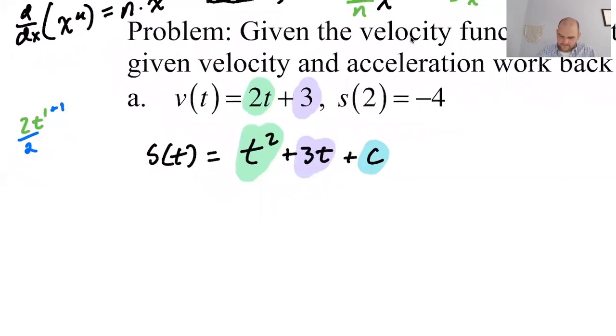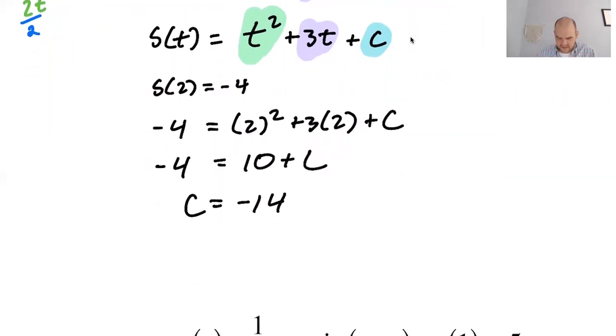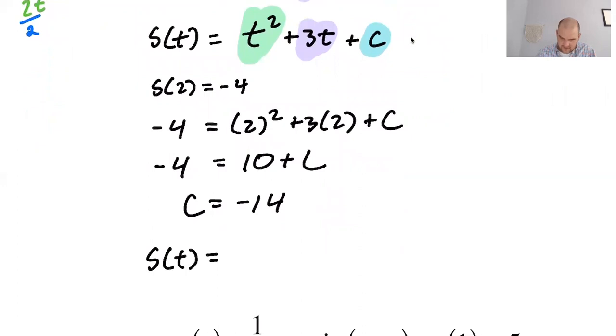How are we going to solve for this? Well, we also know that s of 2 is negative 4, which is kind of weird random information, unless you remember to write plus c. So if I plug in, knowing that s of 2 is equal to negative 4, that means negative 4 is equal to 2 squared plus 3 times 2 plus c. So what do we have here? Negative 4 is equal to 6 plus 4, 10 plus c. So c is actually negative 14. So overall, what is s of t? s of t is going to be the thing we got. So t squared plus 3t. But then we know that c is negative 14, so minus 14. This is our function that does it.